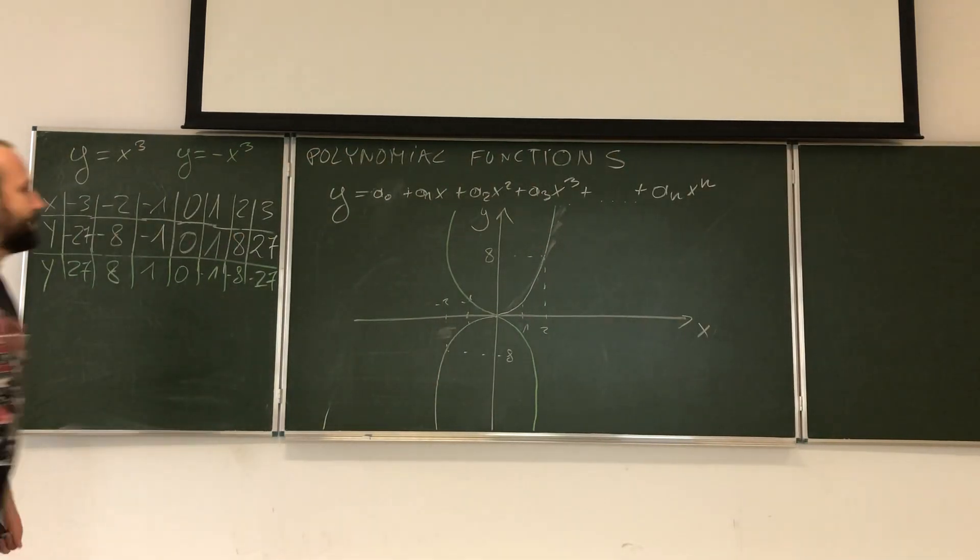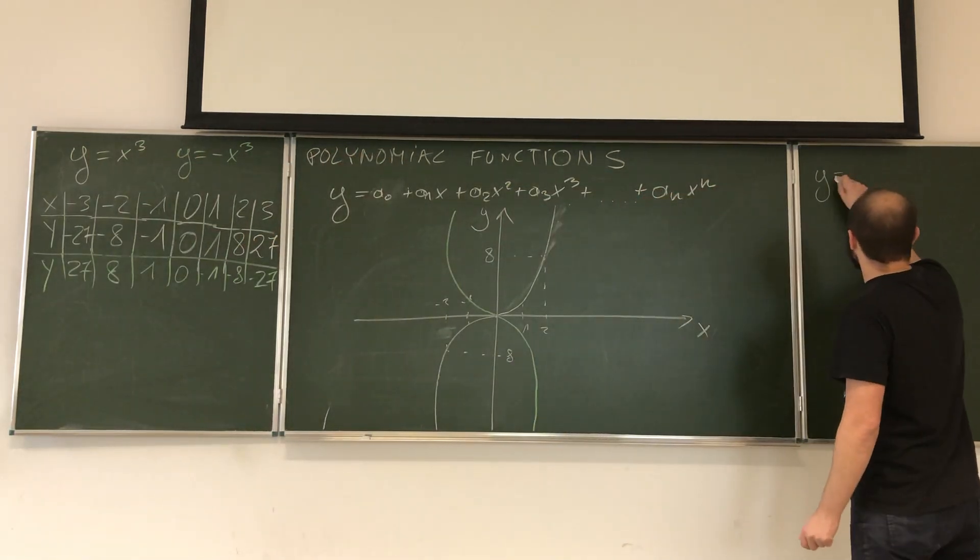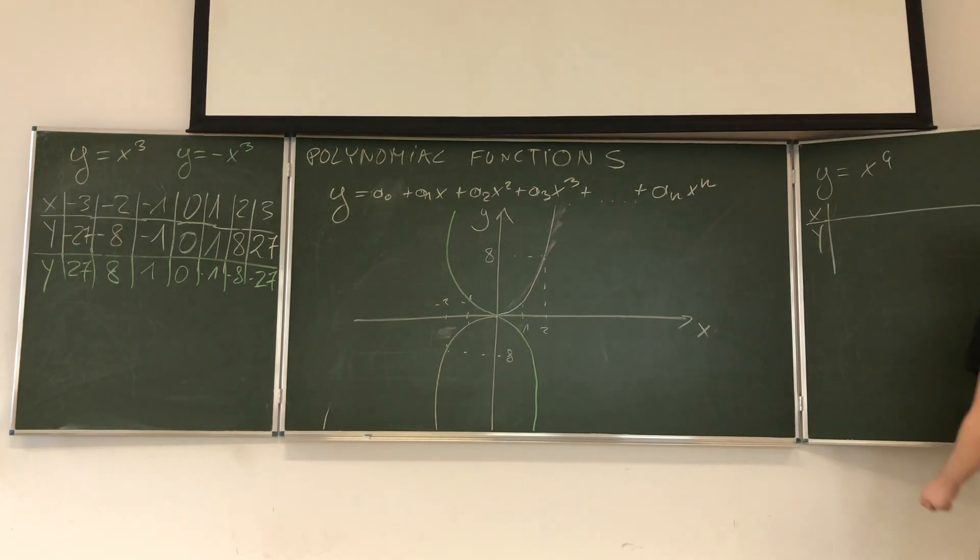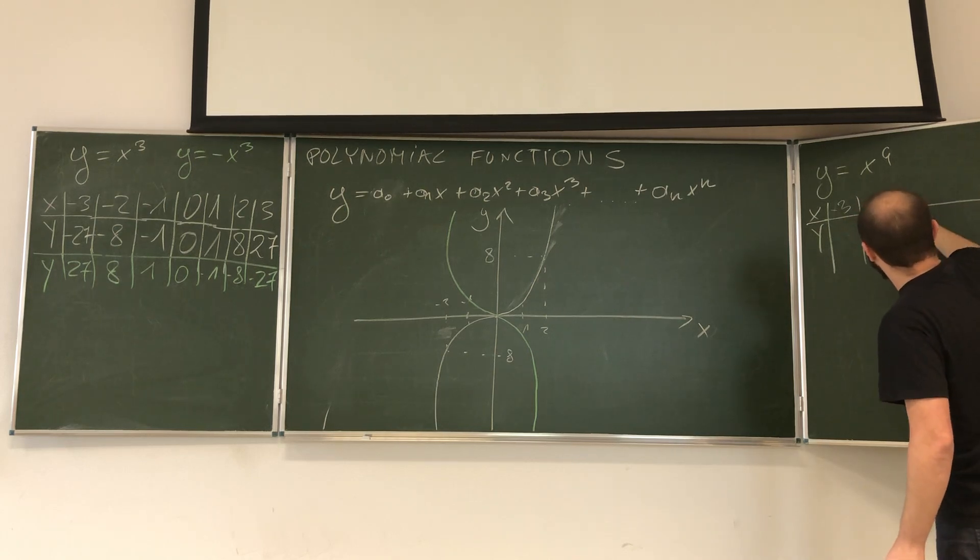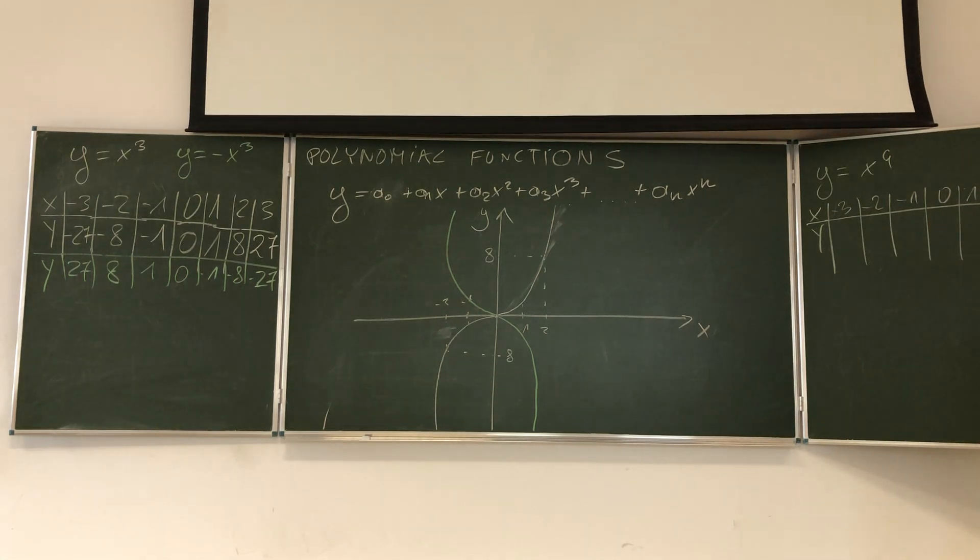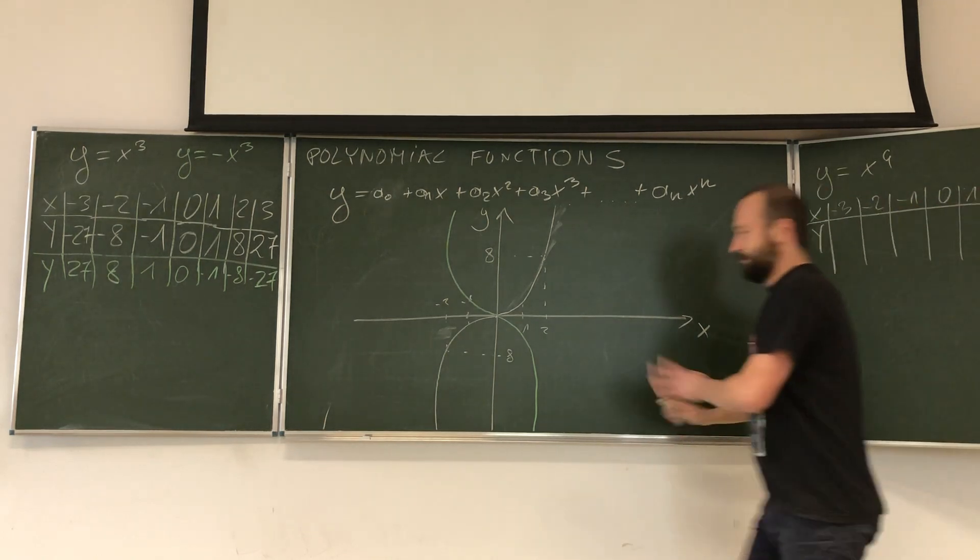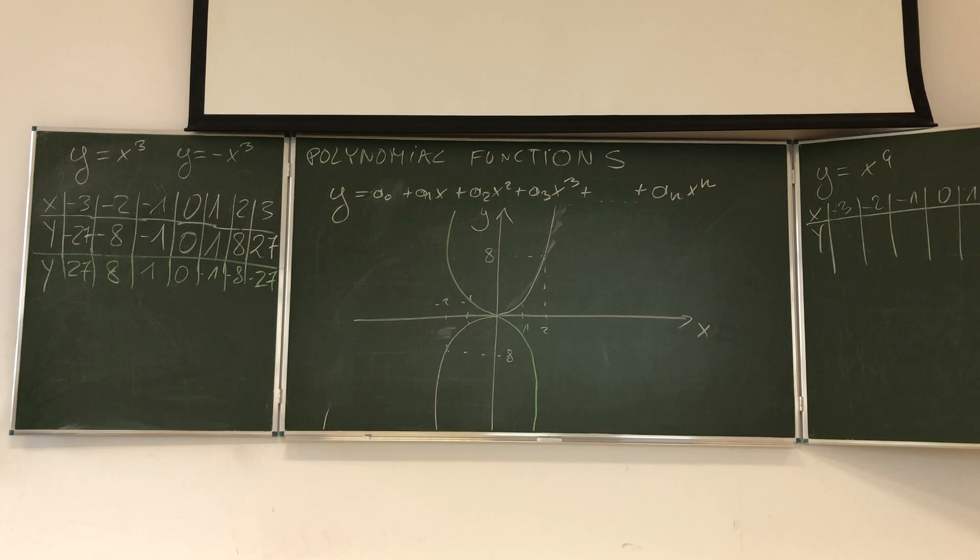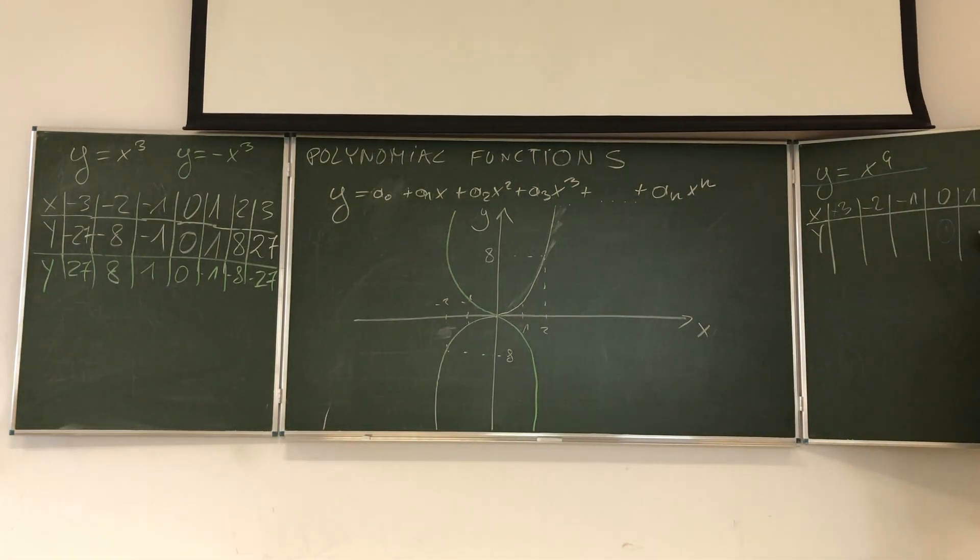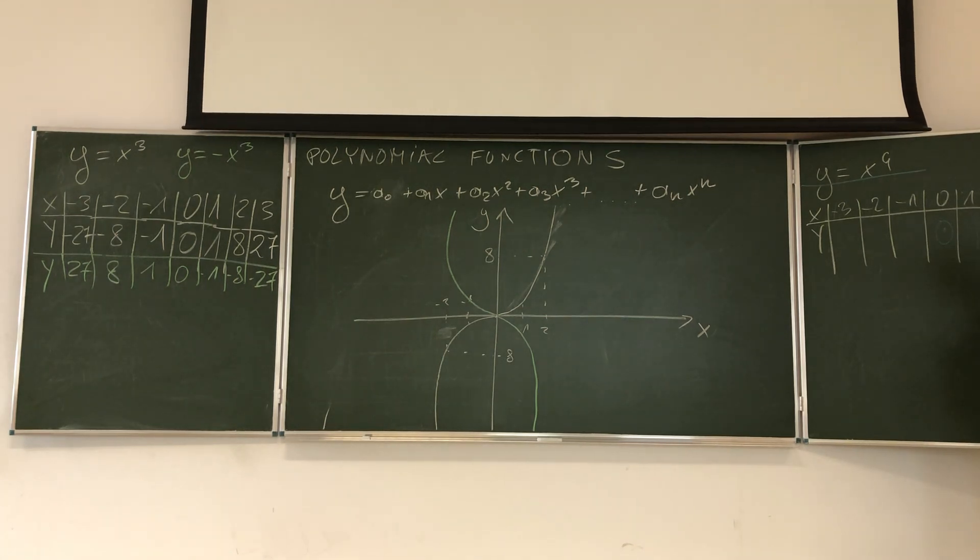So if I would have here now function y equals x to the power of 4, what would we have? Negative 3, negative 2, negative 1, 0, 1, 2, 3. Now 0 to the power of, you know what, let's do it with a color. I'll just say we'll use blue and yellow. So now y, if x is 0, 0, 1, 1, 2 to the power of 4 is 16, and 3 to the power of 4 is 81.